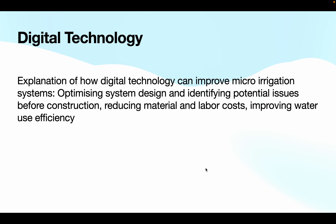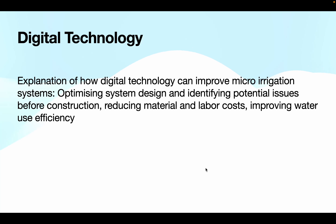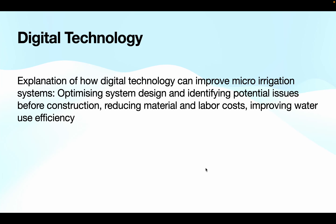Digital technology can significantly improve micro irrigation systems by optimizing system design and identifying potential issues before construction, reducing material and labor costs, and improving water use efficiency.